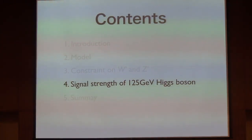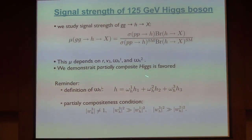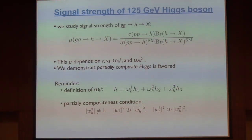Finally, I discuss the signal strength of the 125 GeV Higgs. I calculated only the gluon fusion production process, since this is the dominant production process — other processes like vector boson fusion are omitted for simplicity. The signal strength depends on four model parameters: R, v3, omega1, and omega2. Omega1 and omega2 are important for probing the partially composite Higgs condition. By plotting the signal strength on the omega1 vs. omega2 plane, we can see which region is favored, and if the partially composite region is favored it means the partially composite Higgs idea is viable.